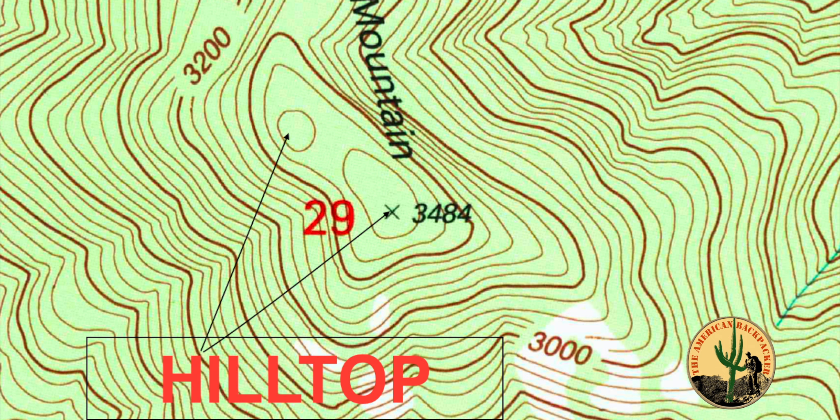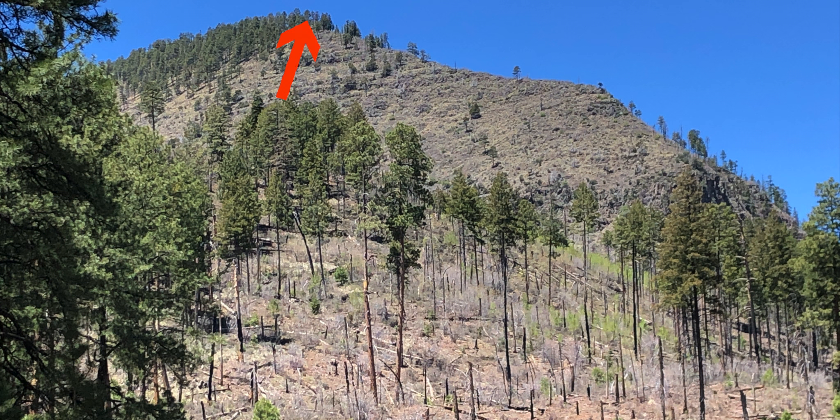The first major terrain feature is going to be a hilltop. A hilltop is an area of high ground that slopes down in all directions. On this topographical map the arrow is pointing to two hilltops. A hilltop is designated as a closed concentric circle. This is a picture I took when I was in the Blue Range Primitive, a beautiful wilderness area.